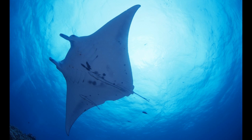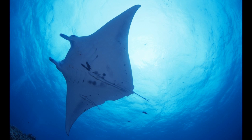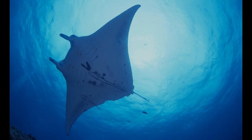Welcome to this video on enhancing photos with text and graphics in PaintShop Pro. In this tutorial you will learn how to add text to an image, importing a graphic onto an image, using a preset shape, adding a border, and changing layer opacity. PaintShop Pro has many useful tools that will allow you to add text, graphics, objects and borders which will turn an ordinary picture into a creative work of art.